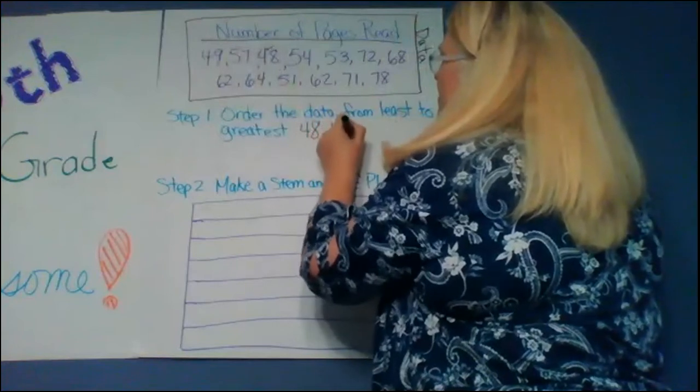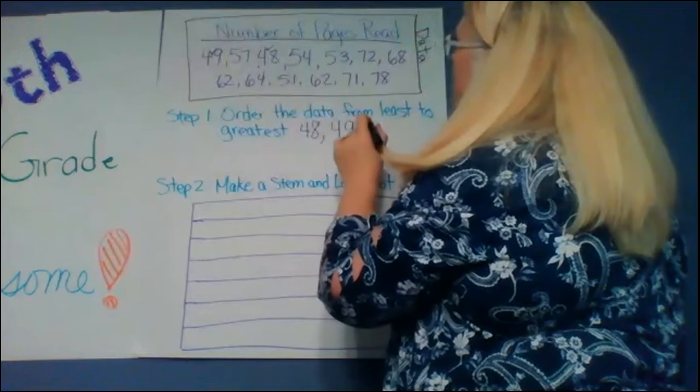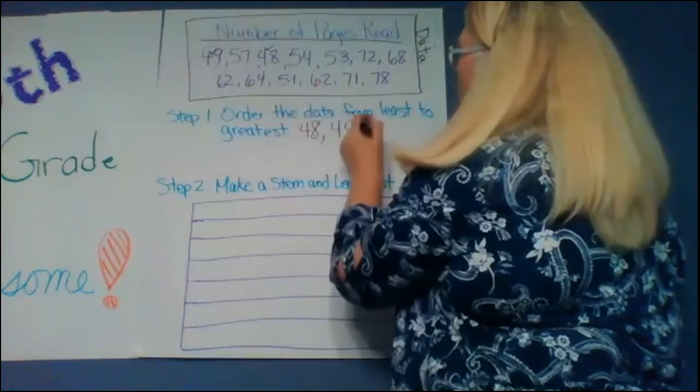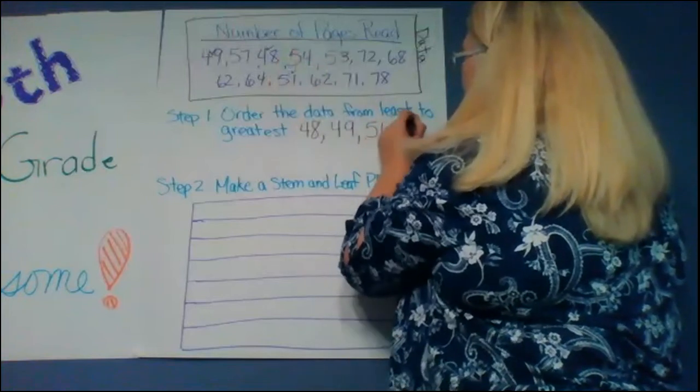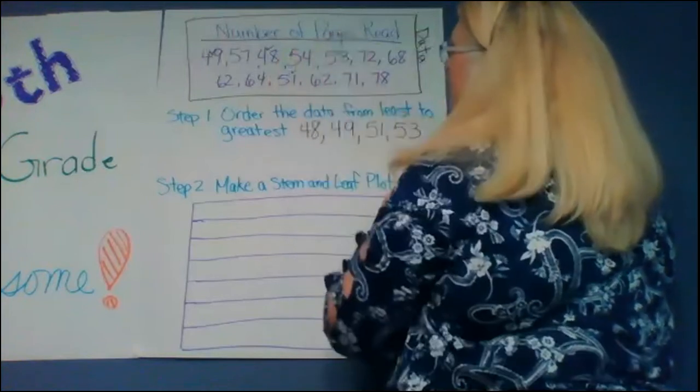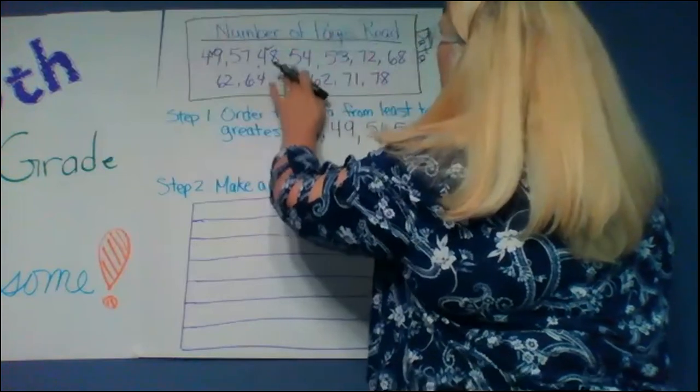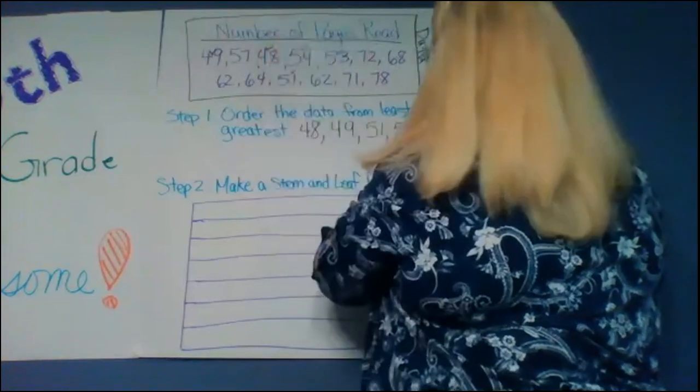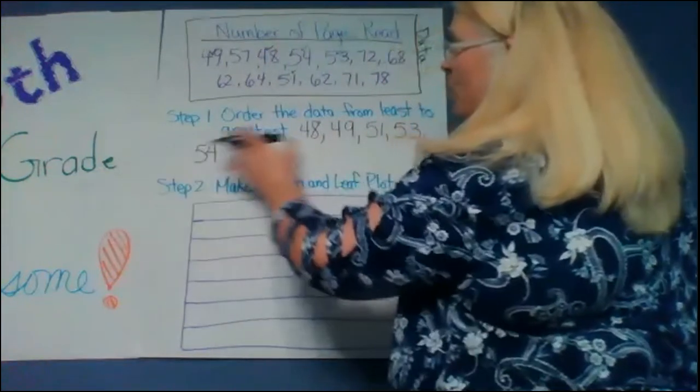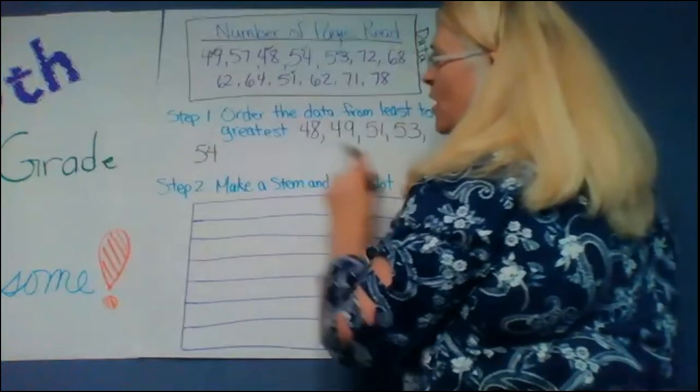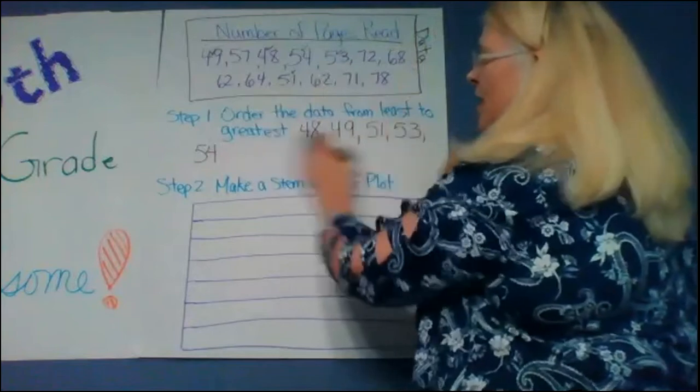49 looks like 51 would come next, 53, 54 and I'm going to start another line. If I had a big white board I could put it all in one list or if I was writing small on notebook paper. But for this we're going to have to do two lines.